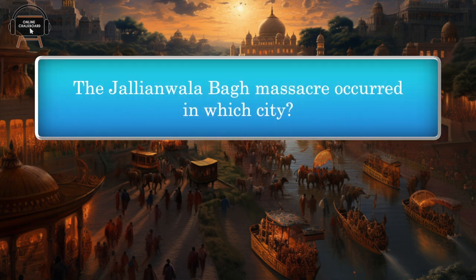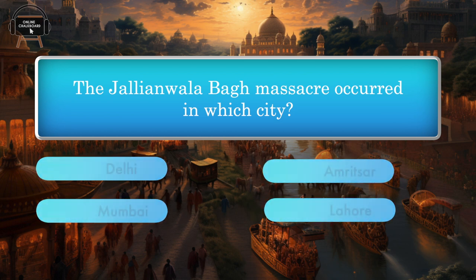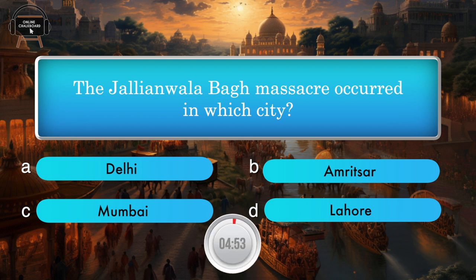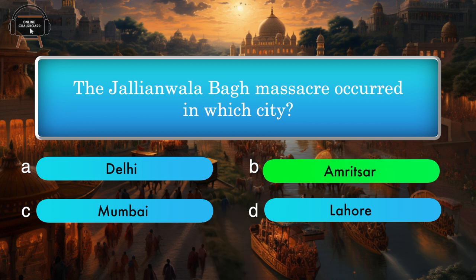The Jallianwala Bagh Massacre occurred in which city? Delhi, Amritsar, Mumbai, Lahore. Answer: Amritsar.